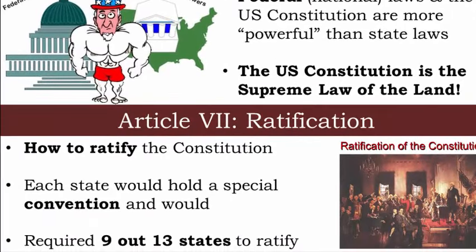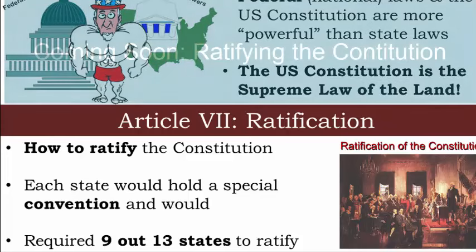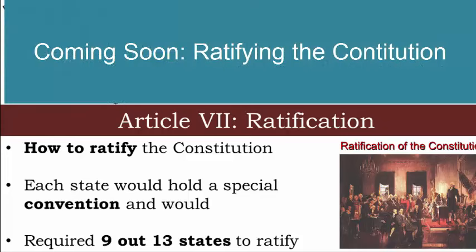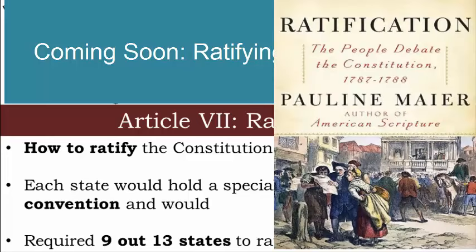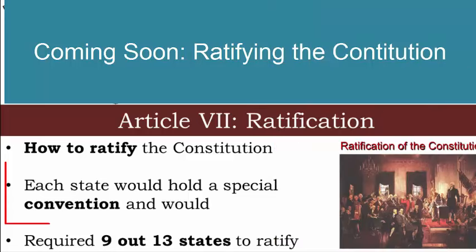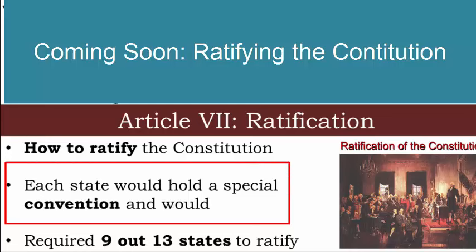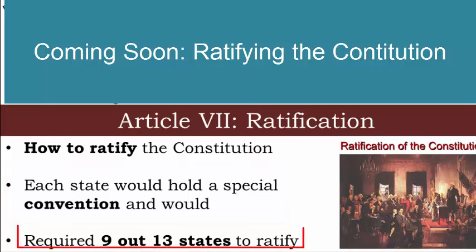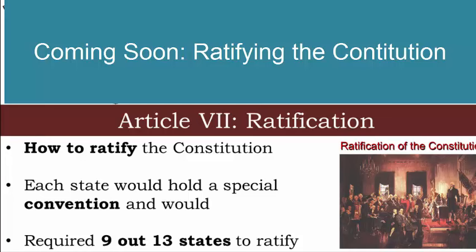Article 7 told the country how the Constitution would be ratified by the people and the states. The framers weren't just imposing their plan — they wanted the people and the states to agree with it. Every state would hold a convention where people would vote on the Constitution, and it would go into effect when 9 out of 13 states ratified it. This is the beginning of political parties fighting over whether to have the Constitution or not.